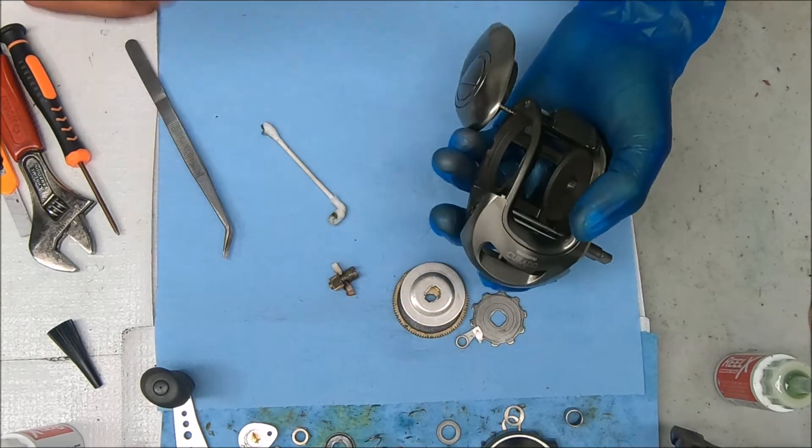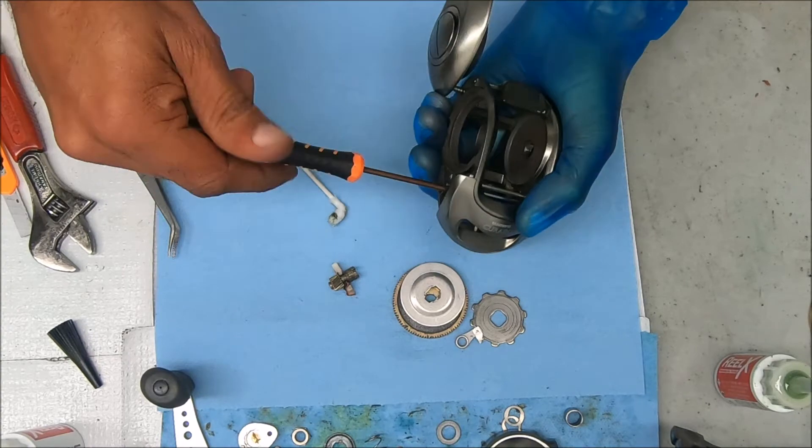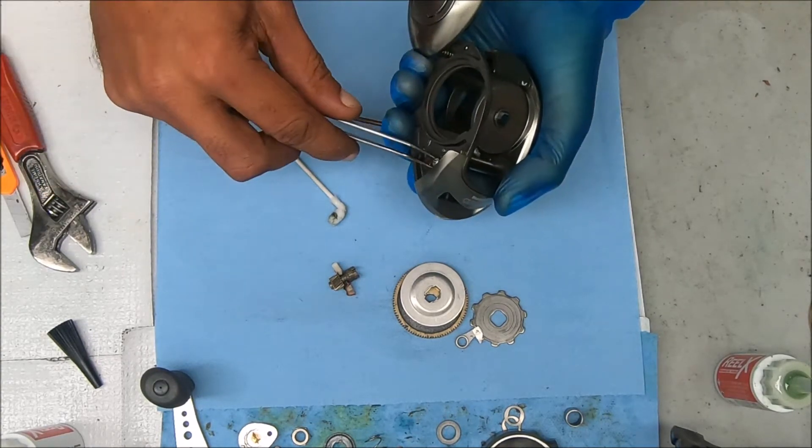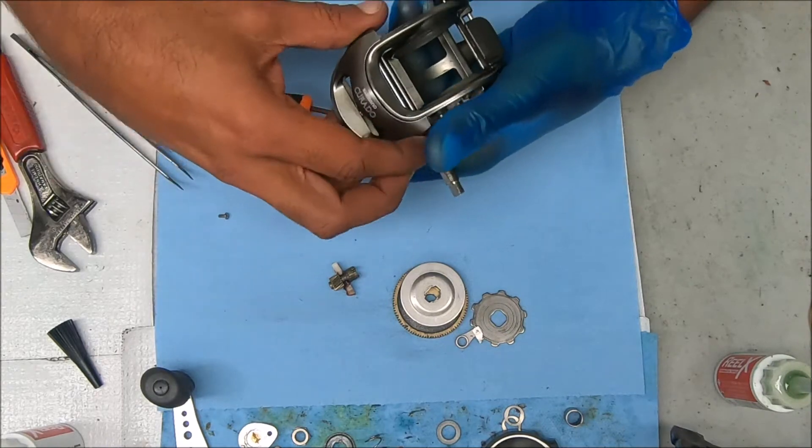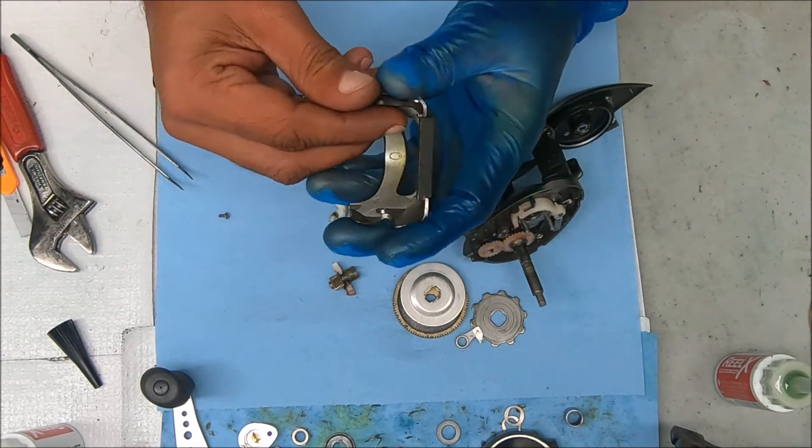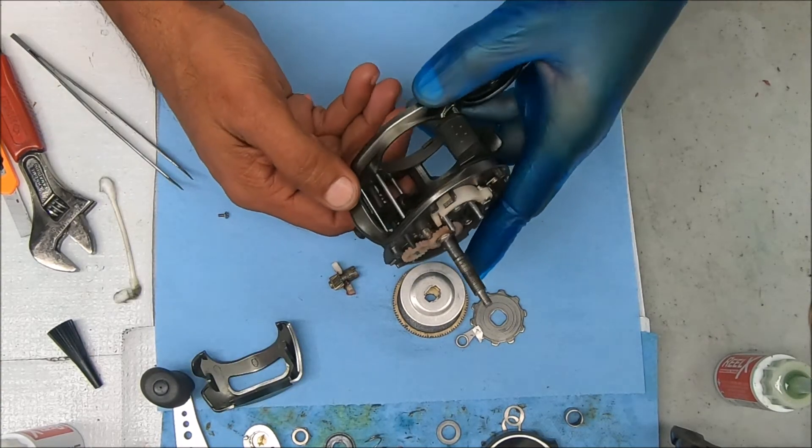And let me go ahead and remove this cover. To do that, you're going to remove that screw on this side. And it just pulls straight off. Yeah, there's some more green stuff. And I think that's going to be about it for it.